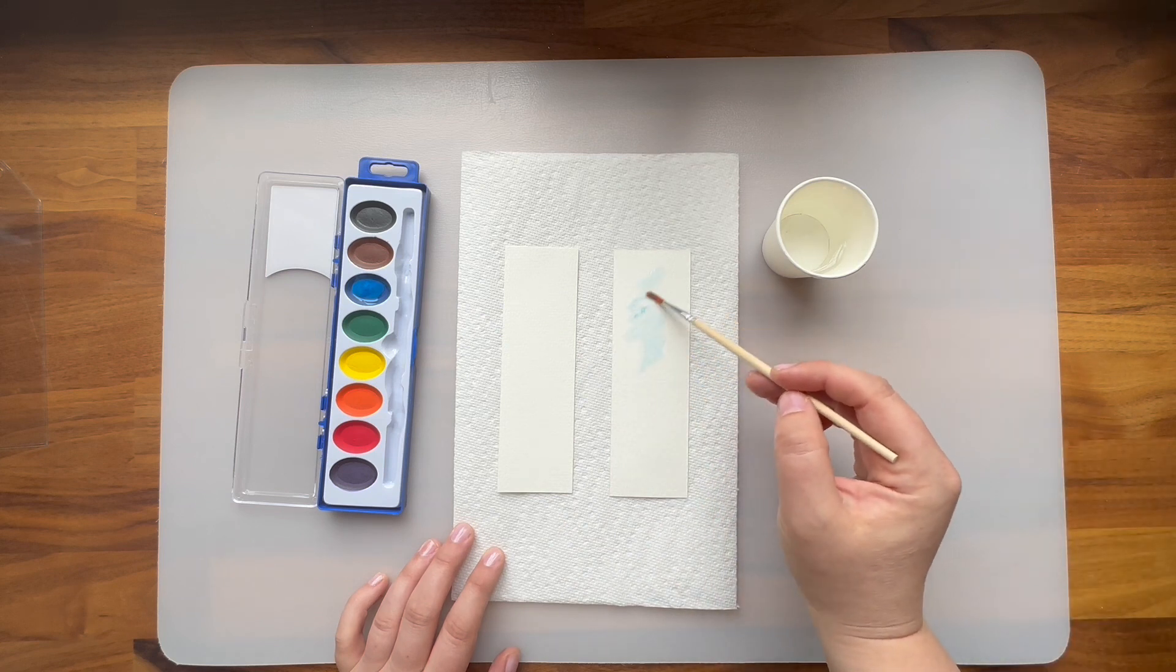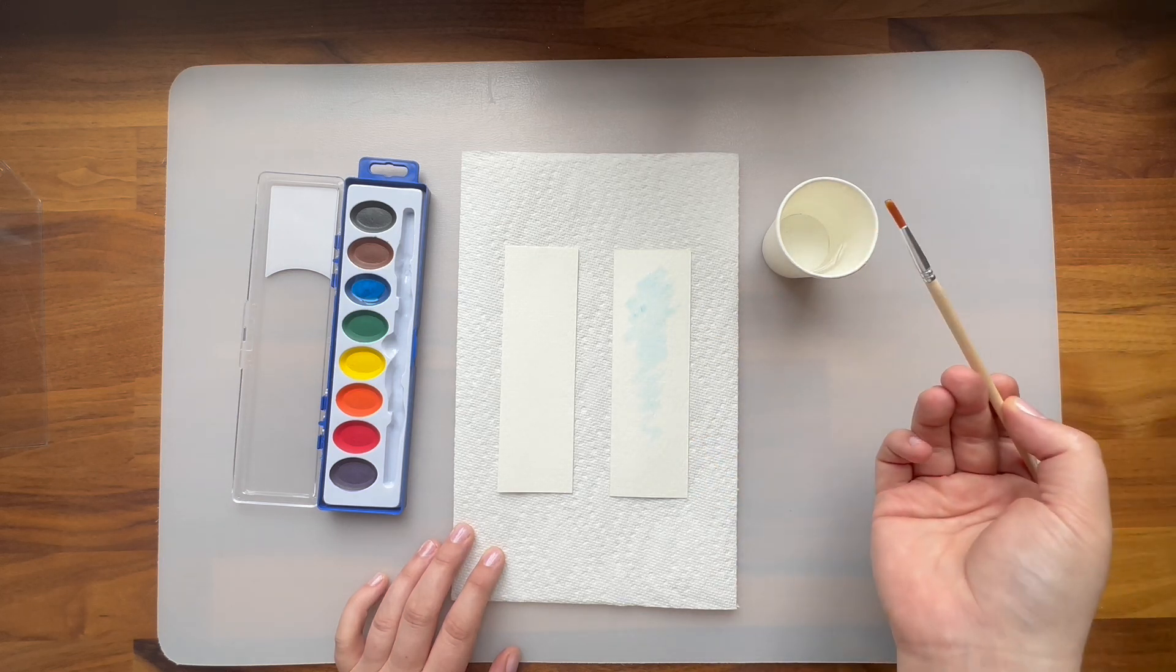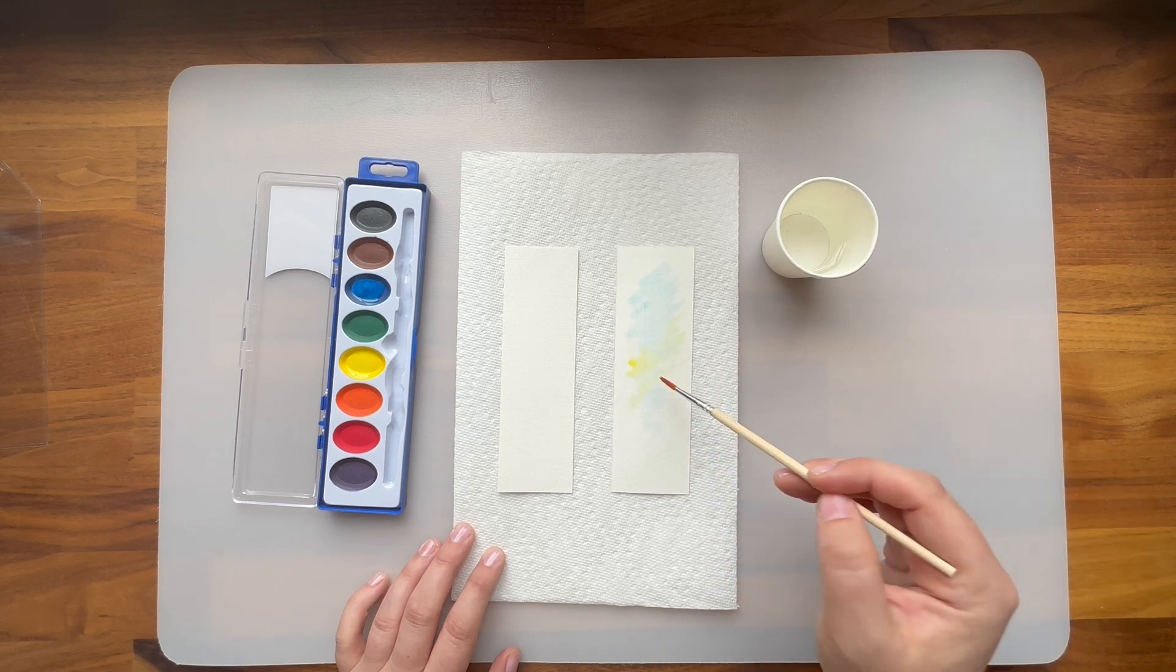I'm planning to do a bit of an ombre effect with colors blending together, so I'm starting out with blue, then I'm adding a bit of yellow and you'll see that green appear in the middle.